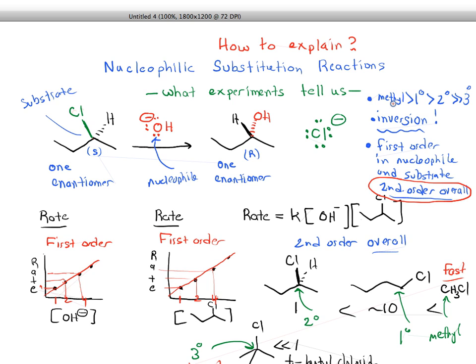And lastly, these types of reactions are fastest for methyl, then primary, then secondary, then tertiary being the slowest type of reaction.